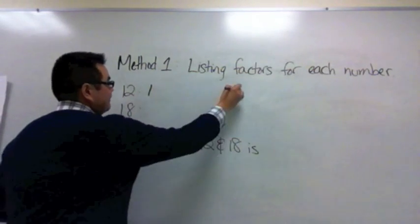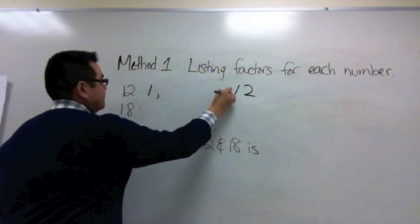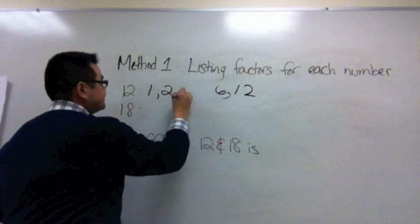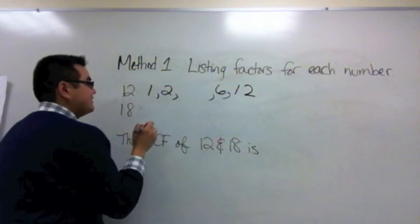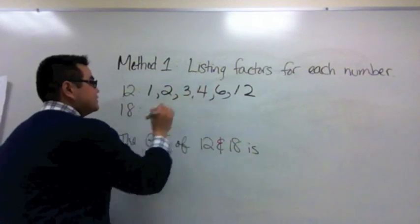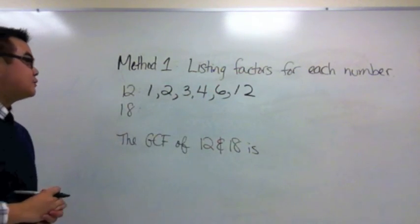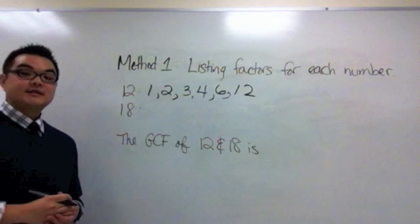So for 12, 1 times 12 gives me 12, 2 times 6 also gives me 12, and finally the last factor pair is 3 times 4. So my list of factors for 12 is 1, 2, 3, 4, 6, and 12.